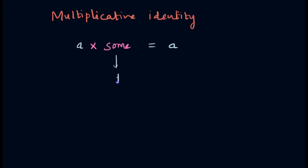So there are different kinds of identities and for now we are studying about additive identity for integers which is zero.